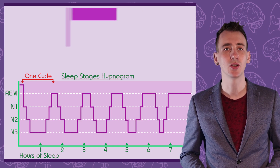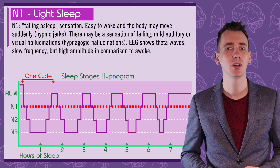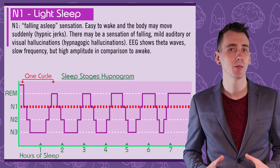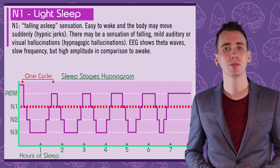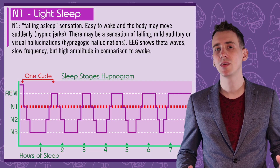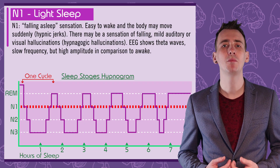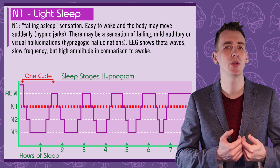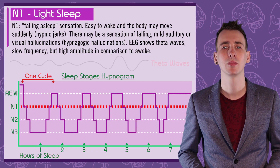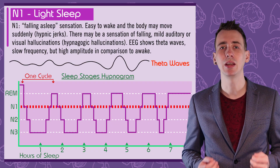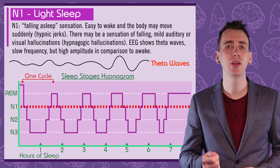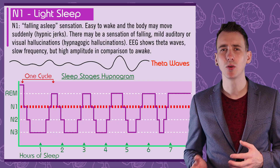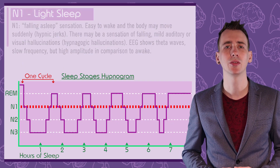N1 is the sensation of moving from awake to asleep. You're easy to wake and the body can move suddenly — these are called hypnic jerks. There may be a sensation of falling, or even mild auditory or visual hallucinations called hypnagogic hallucinations. This stage can be identified on the EEG by the presence of theta waves: waves that are slower in frequency but greater in amplitude than wakefulness.